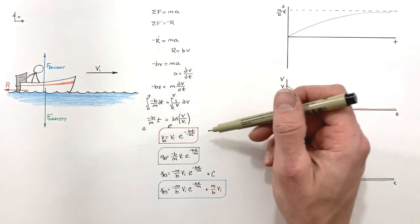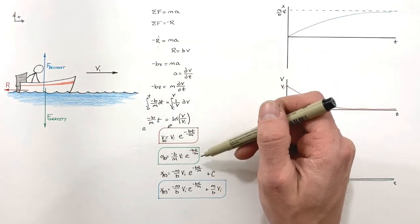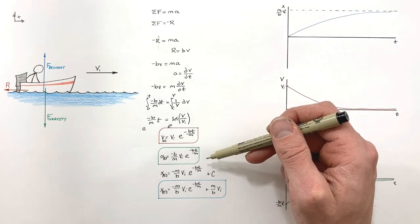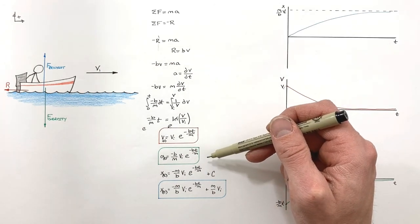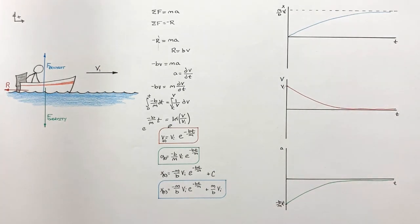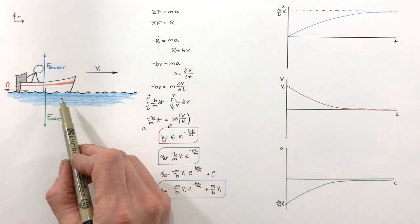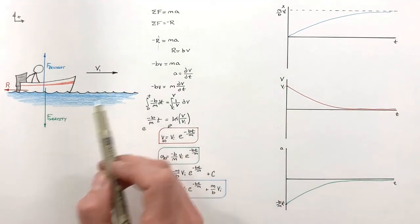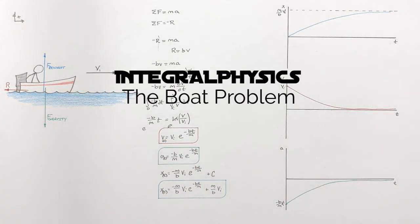In this problem we've taken a look at the resistive force acting on a coasting boat, applied Newton's second law, and derived the position, velocity, and acceleration as functions of time, then graphed each to understand their behavior. This is the boat coasting through water problem.